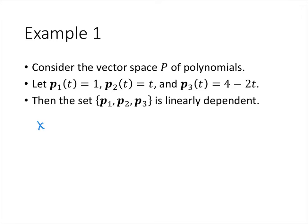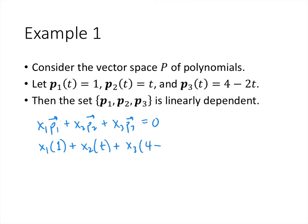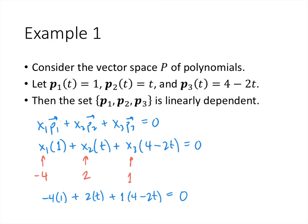The reason it's linearly dependent: if we look at the vector equation x₁p₁ + x₂p₂ + x₃p₃ = 0, we can find a solution that isn't just setting all the x's equal to zero. With p₁ = 1, p₂ = t, and p₃ = 4−2t, if we put in −4 for x₁, 2 for x₂, and 1 for x₃, we get −4(1) + 2(t) + 1(4−2t) = 0. We made it equal zero without setting all x's to zero, so this is a dependence relation and these vectors are linearly dependent.